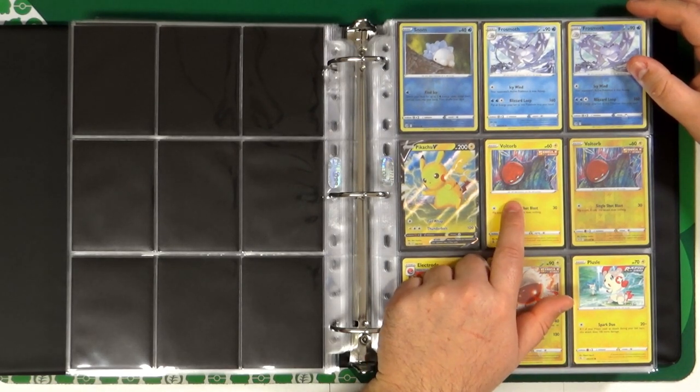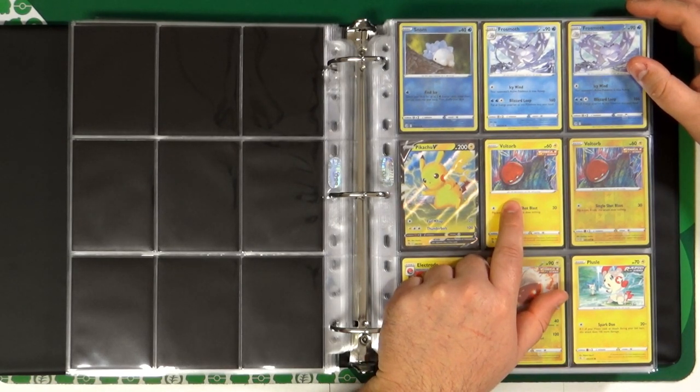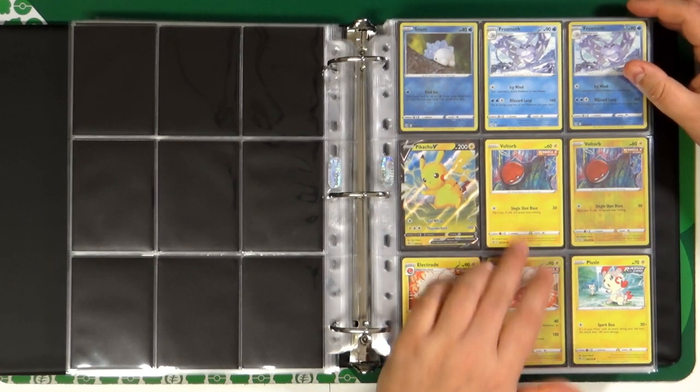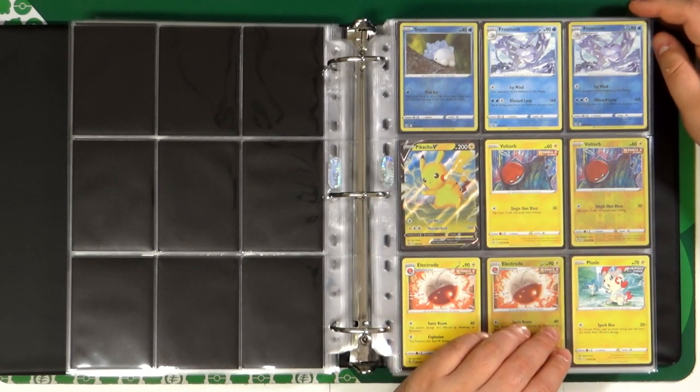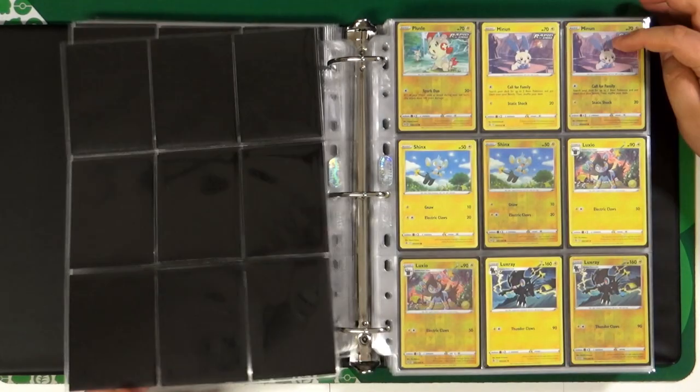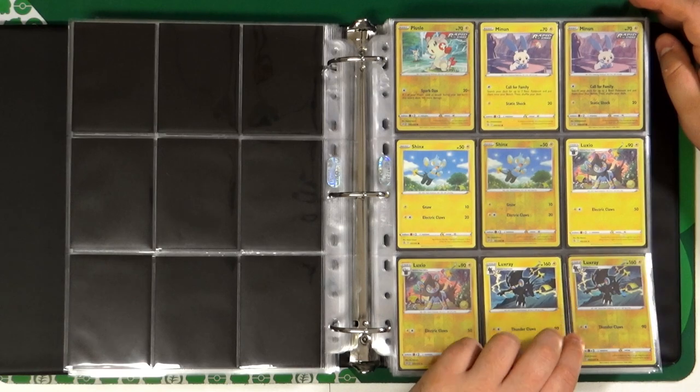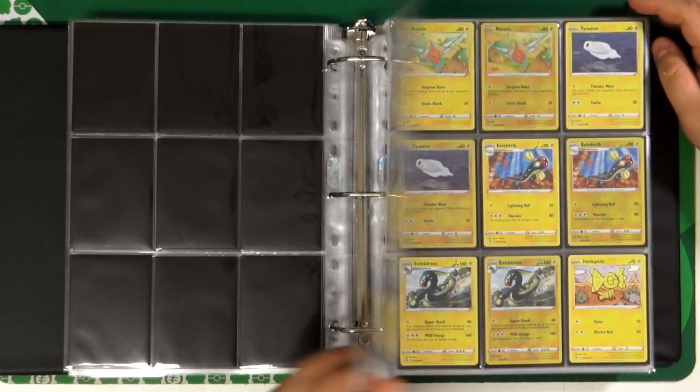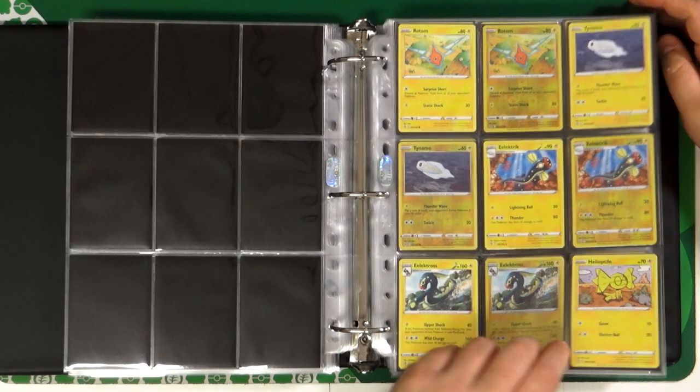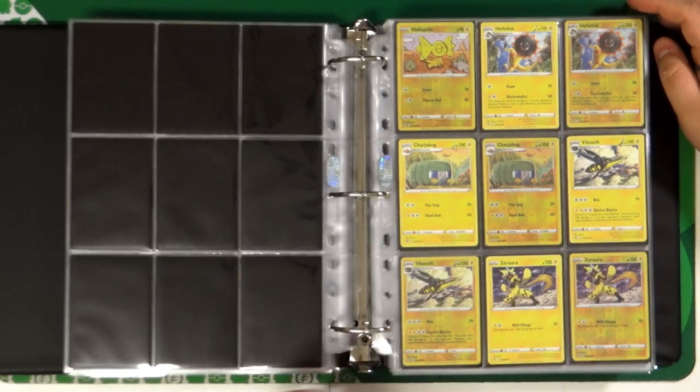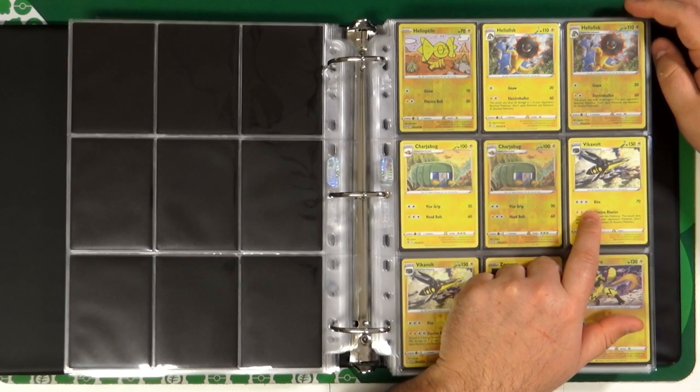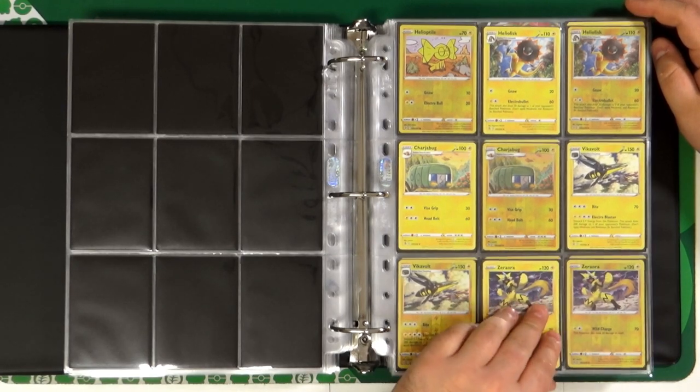This really special art of Voltorb. It's not a usual art but I really like this type of artwork. Plusle and Minun, a beautiful artwork couple. Shinx and its evolution line, Rotom, Charjabug and Vikavolt. Also this one is a really beautiful artwork of this set.